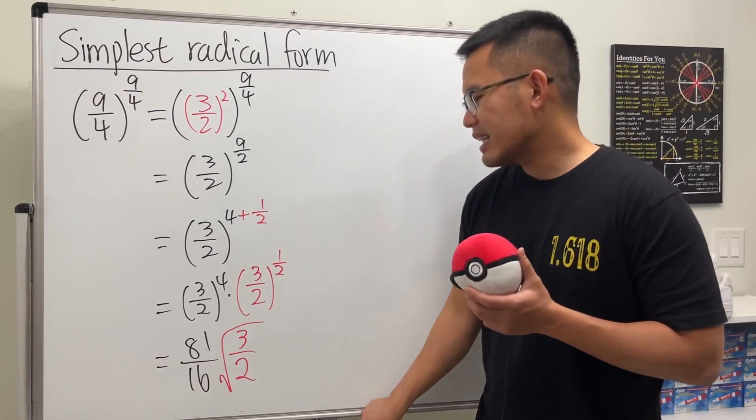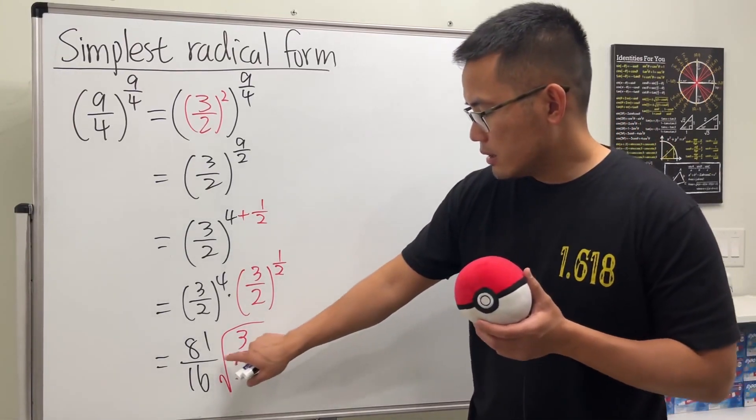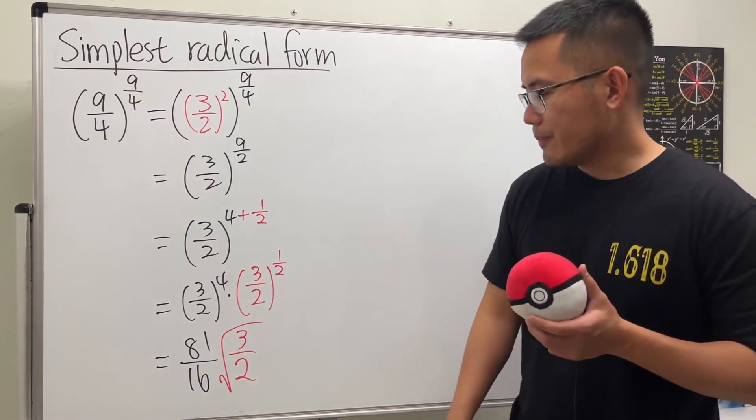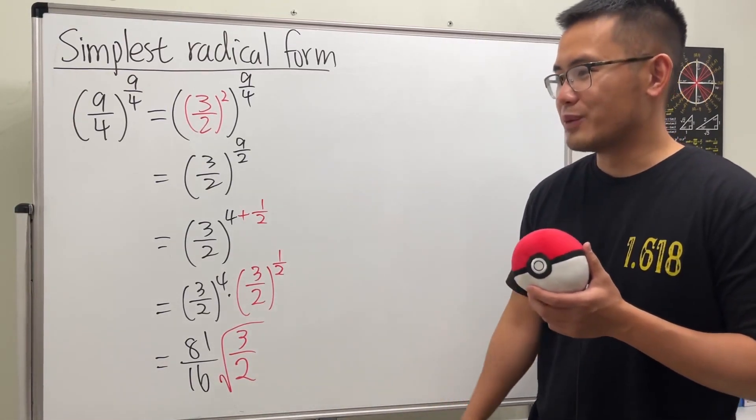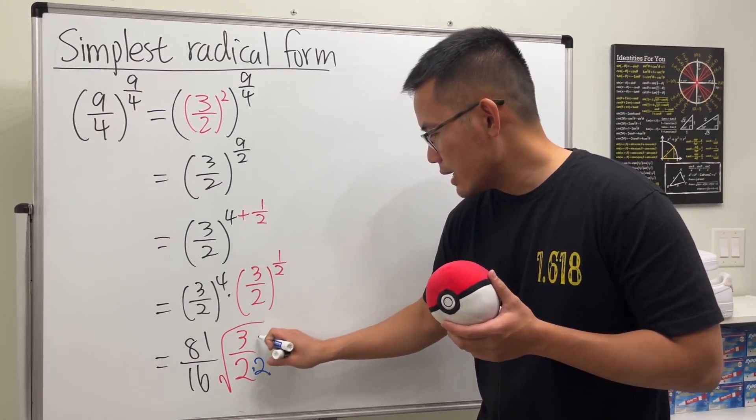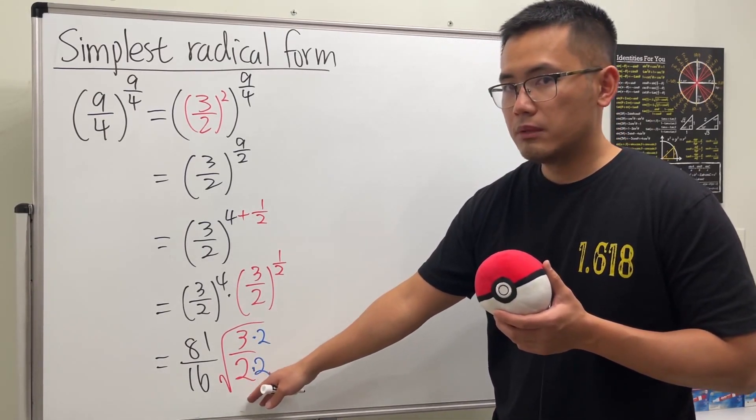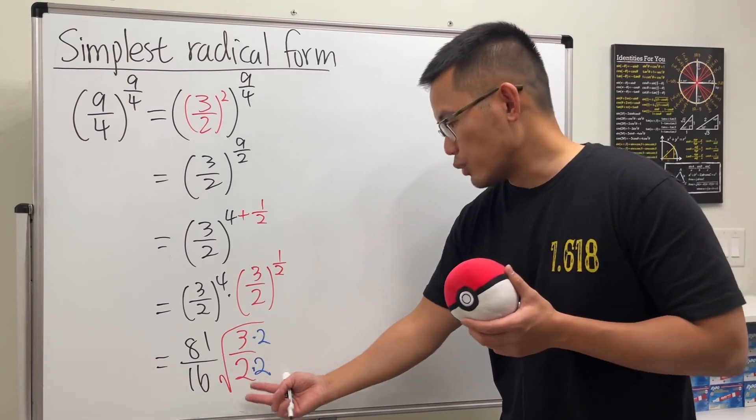But technically, this is not done yet, because in algebra we don't want to have the radical on the bottom. So this is what we can do. Let's multiply the 2 and 2 here. Because 2 times 2 in the square root is square root of 4, which is just a regular 2.